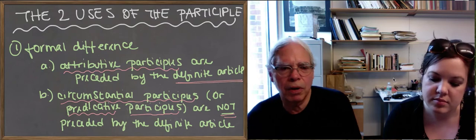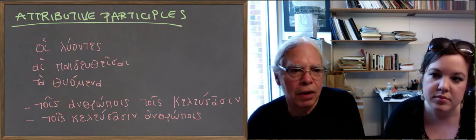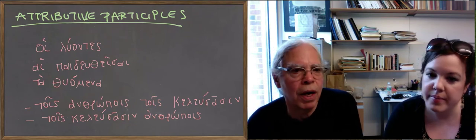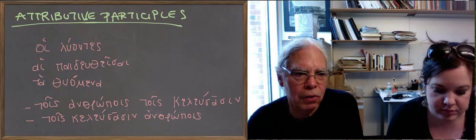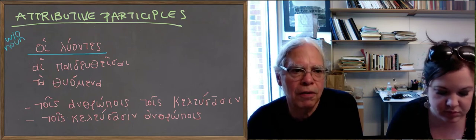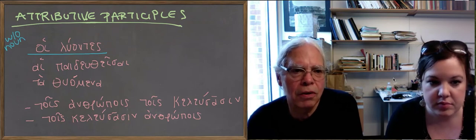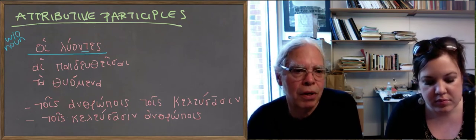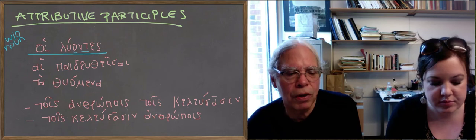Let's look at the attributive participles — they're the easier and the more restricted class. If you take a participle of any kind and you stick an article in front of it, it doesn't have to have a noun agreeing with it; in fact the most common use is without. We've given you three examples. First, *hoi* — the nominative plural masculine of the article — and *luontes*. *Luontes* is a present active participle in the nominative plural masculine: you've got the -s ending of the nominative plural masculine, the -nt- format for active participles, and the stem is *lu-*, which is the present active stem.